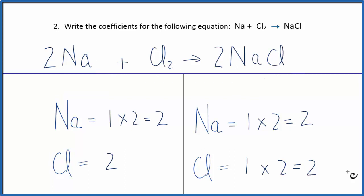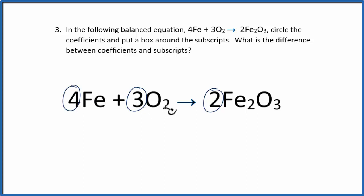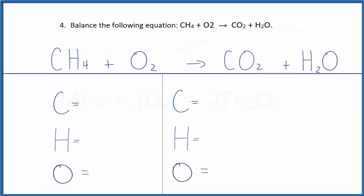One of the big places people have problems when balancing equations is not understanding the difference between coefficients and subscripts. Coefficients are the numbers in front of the substance — they apply to the whole substance. For example, four iron atoms, and 3×2=6 oxygen atoms. For Fe2O3, the coefficient two applies to everything: 2×2=4, and 2×3=6 oxygen atoms. Subscripts are the numbers after the element — you cannot change these when balancing equations, only the coefficients.